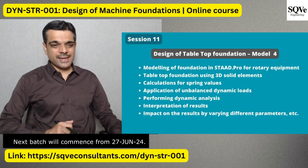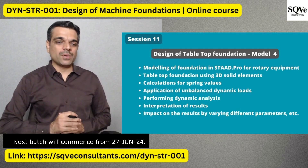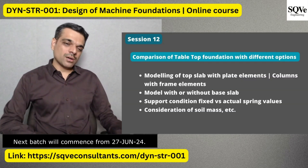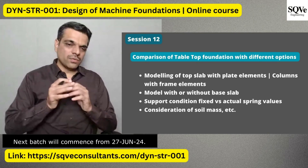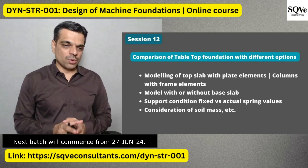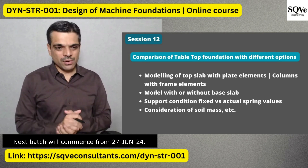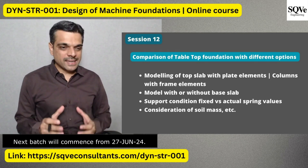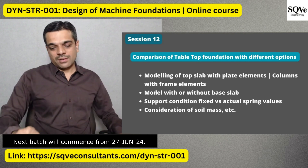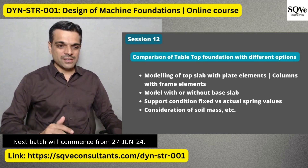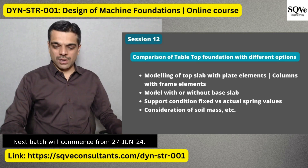In the next session, we'll create a tabletop foundation using 3D solid elements and apply springs to simulate the effect of soil. We'll then compare the tabletop foundation modeled with different options — for example, modeling the top slab with plate elements and columns with frame elements versus using solid elements — and discuss which is the correct approach. We'll also explore modeling with or without a base slab, support conditions (fixed versus actual spring values), and consideration of soil mass.